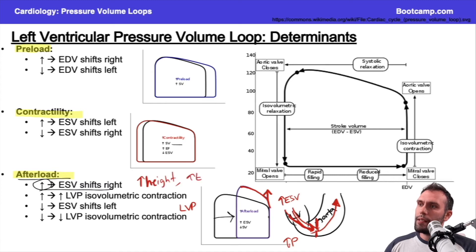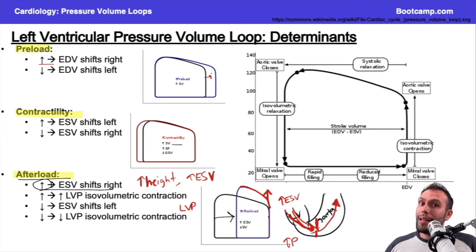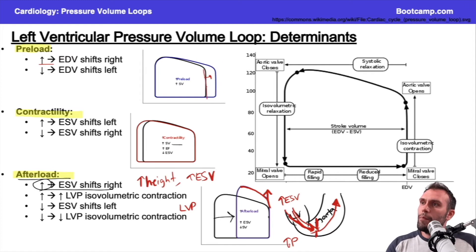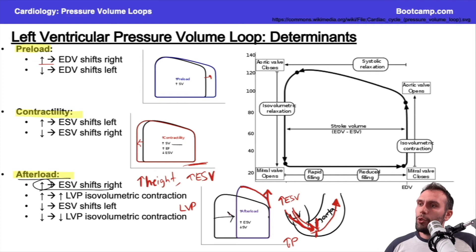To recap: increases in preload shift the end-diastolic volume to the right — the rightward border shifts right. For increases in contractility, the left border shifts left — the end-diastolic volume doesn't change, just the end-systolic volume decreases. If I increase afterload, I get a curve with a greater height and a higher end-systolic volume. The reverse is true for each of these.